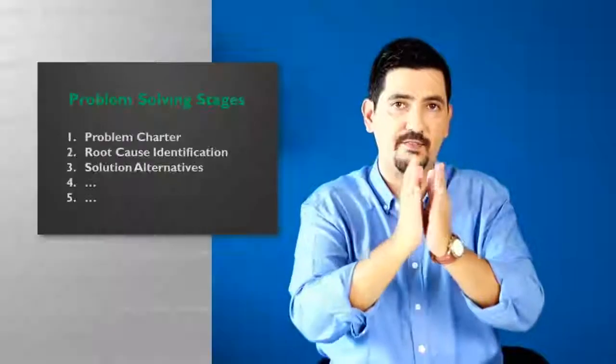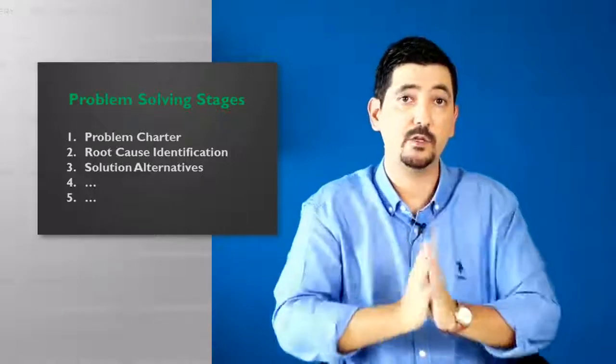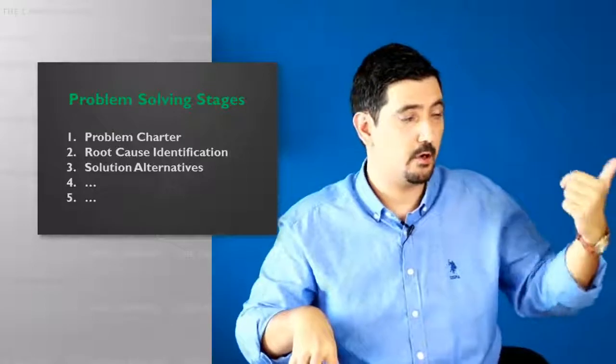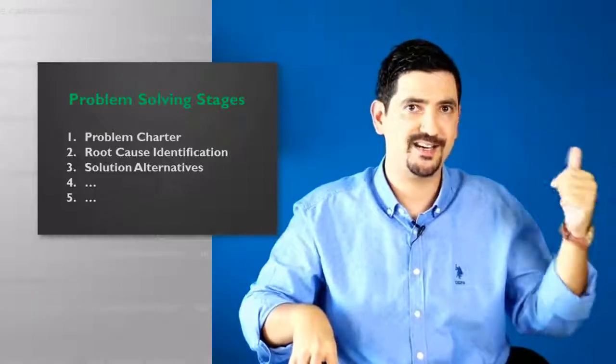We identified a problem. And the root cause was the fact that I wrongly estimated how long it would take to prepare the proposal. Right? I looked at the past examples. Fine. But I didn't properly analyze the scope of work. Now, let's move on to the third stage in our problem solving, which is the fact that we need to develop a few solution alternatives. So, in our example, the objective is to make sure that it never happens again. That I or any of the managers never miss a single submission date for proposals.